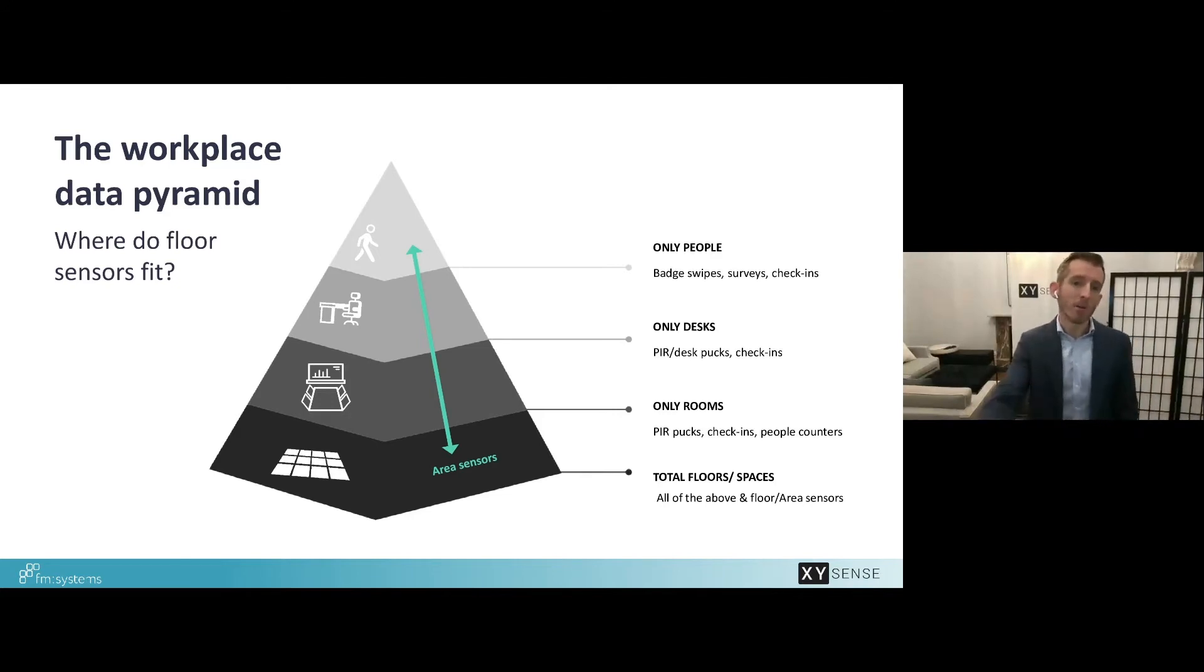And then moving further down the pyramid room sensors either they can count the number of people entering and exiting the room, they can rely on people to check in or else risk having the booking cancelled or you can have pucks at fixed locations under the tables. And finally area sensors give you all of the above like we described but also the flexibility to understand all different types of spaces and count the number of people using those spaces as well as understand where people have moved.